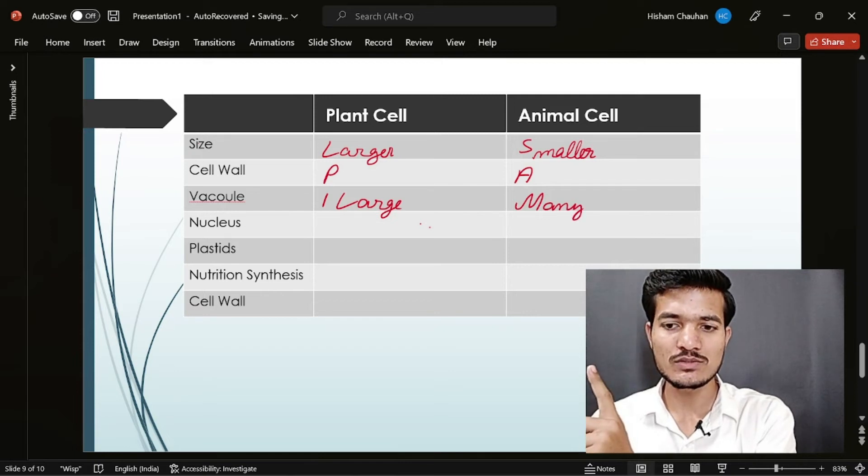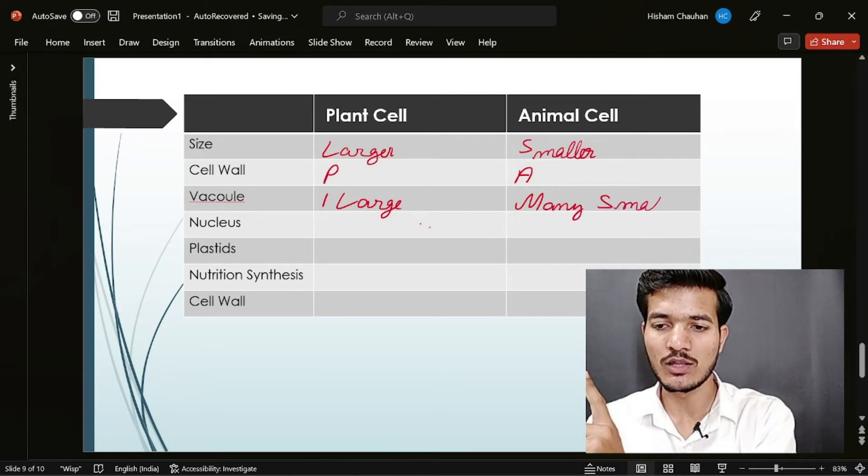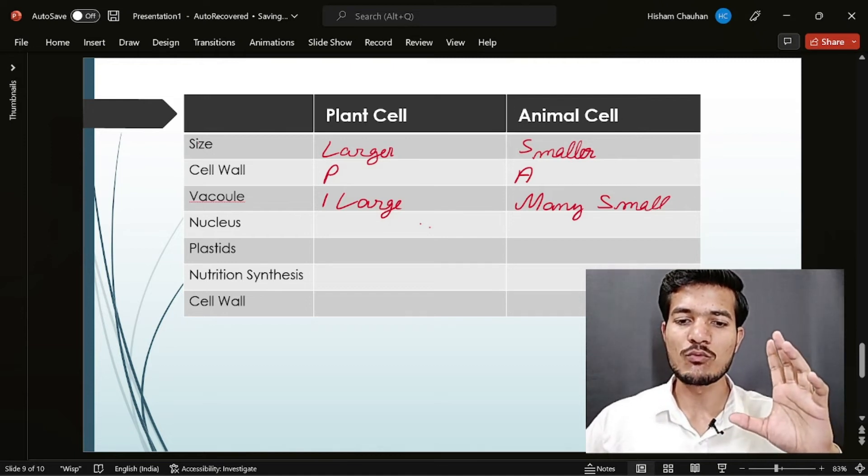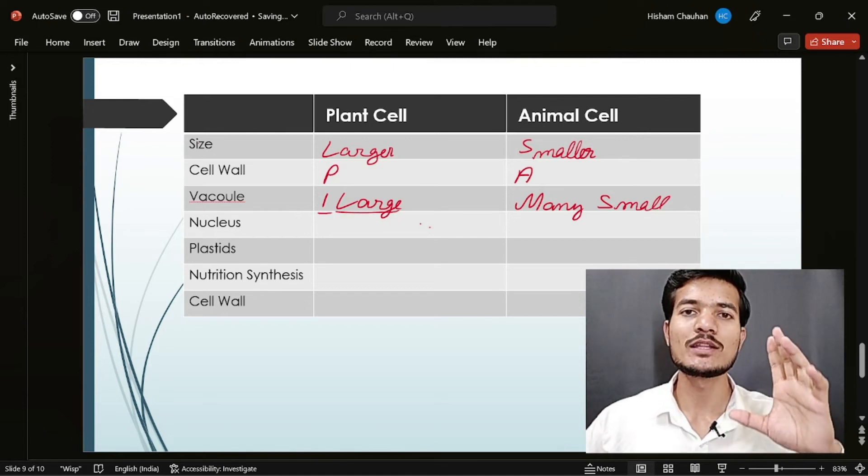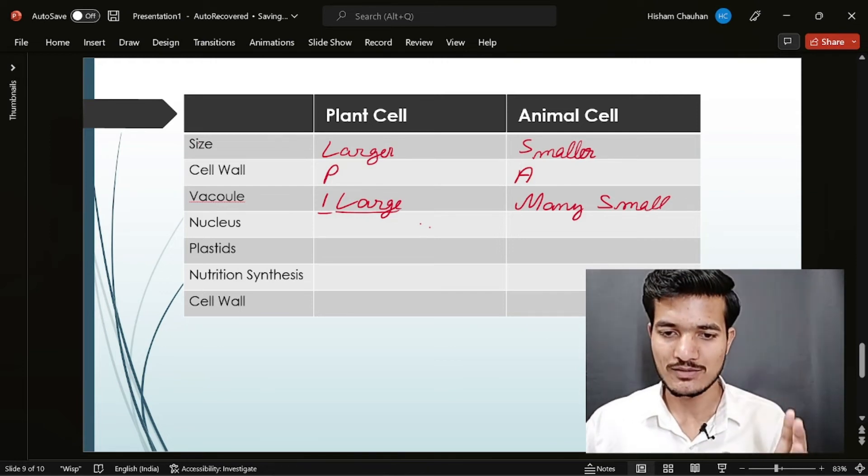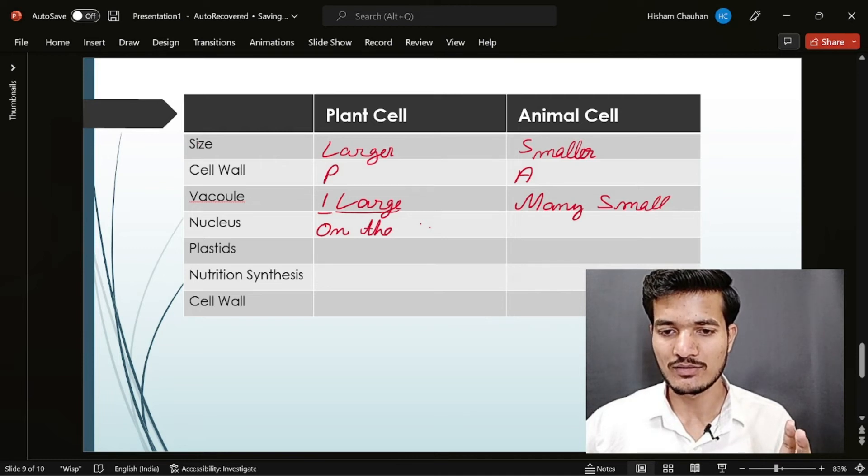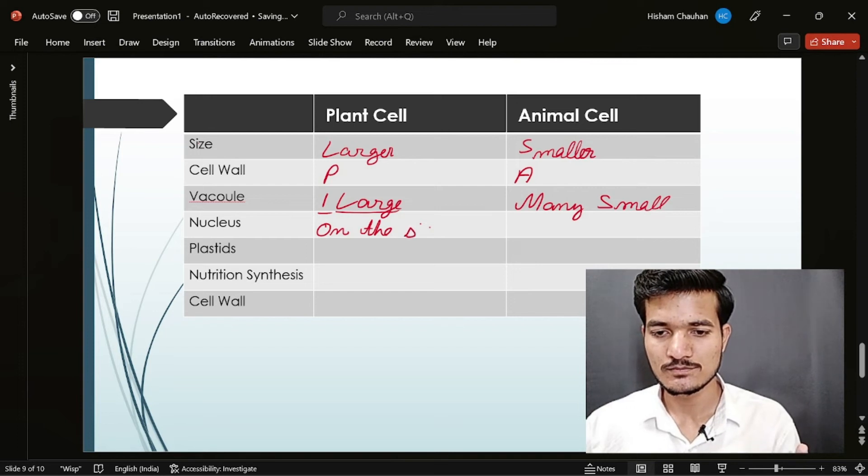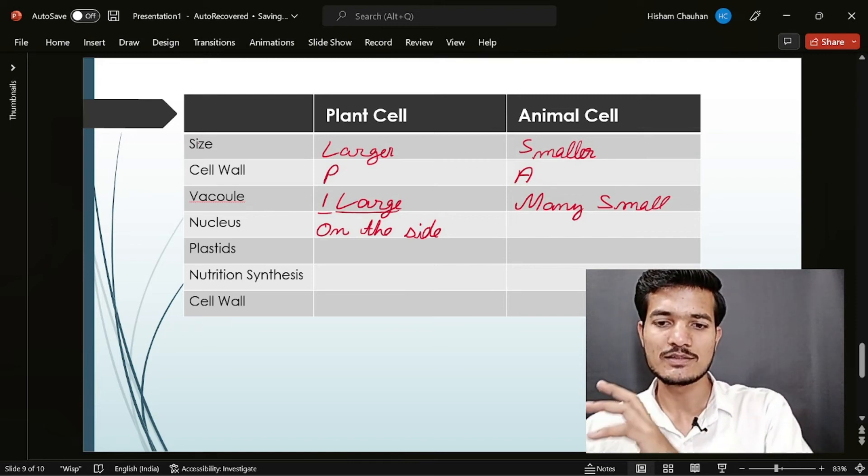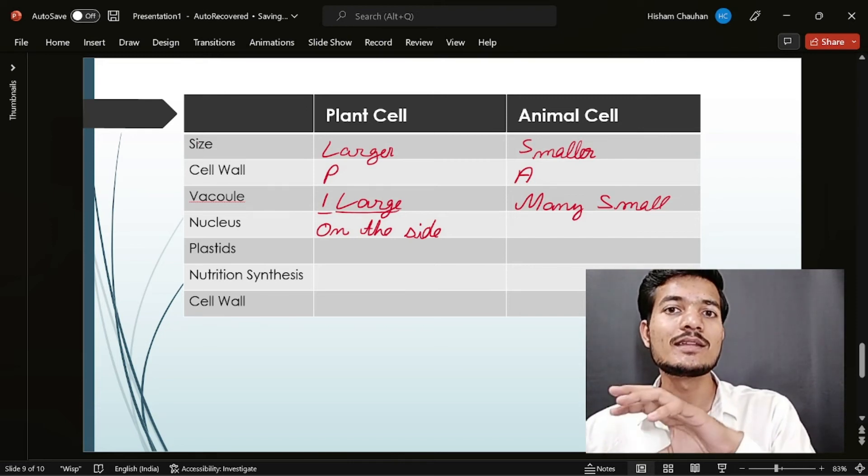All right. Now due to this presence of one large vacuole in the plant cells, the nucleus was on one side, on the site. And in the case of animal cells, the nucleus is in the center.